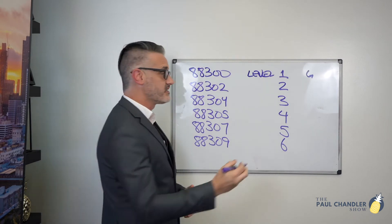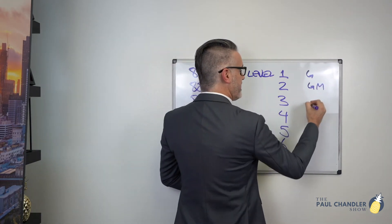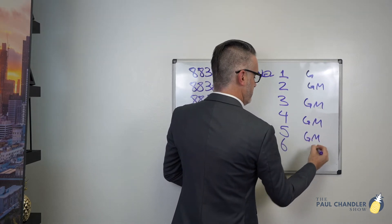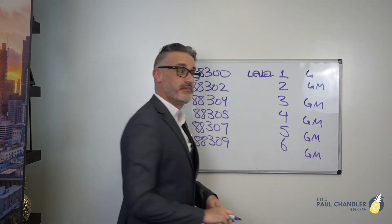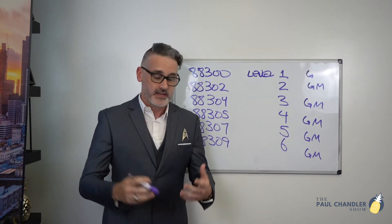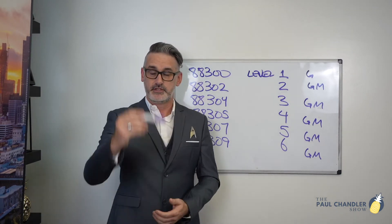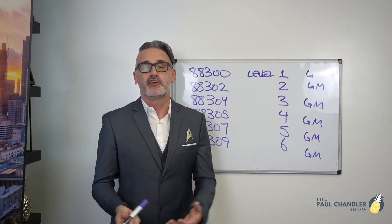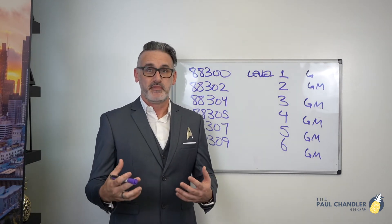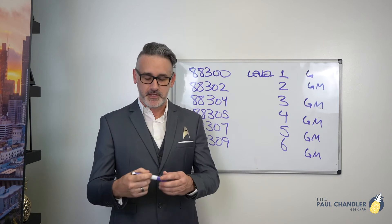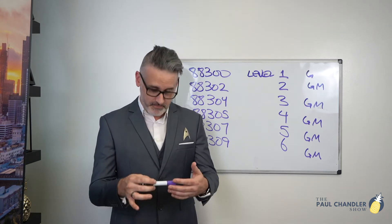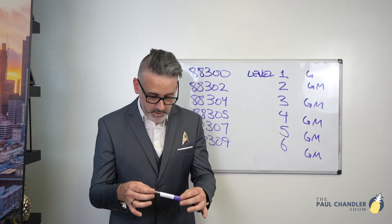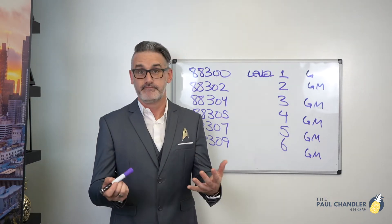Levels 2 through 6 are gross and microscopic examinations. Simply put, gross examination means the doctor takes it out, holds it up, confirms what it is, and puts it back down. Microscopic examination means the doctor actually puts the specimen under a microscope and examines it in detail.